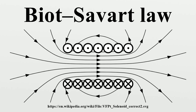The Biot-Savart law can be used in the calculation of magnetic responses even at the atomic or molecular level — for example, chemical shieldings or magnetic susceptibilities — provided that the current density can be obtained from a quantum mechanical calculation or theory.